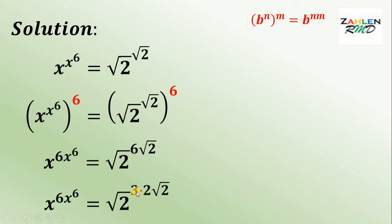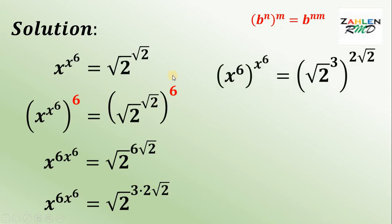Next, factor 6 as 3 times 2. We'll see the purpose of this factorization later on. Now apply the same law again: if we have b raised to n multiplied by m, it equals b raised to n raised to the power of m. The left-hand side becomes x raised to 6, raised to x raised to the 6th power, and the right-hand side becomes square root of 2 raised to 3, raised to 2 square root of 2.